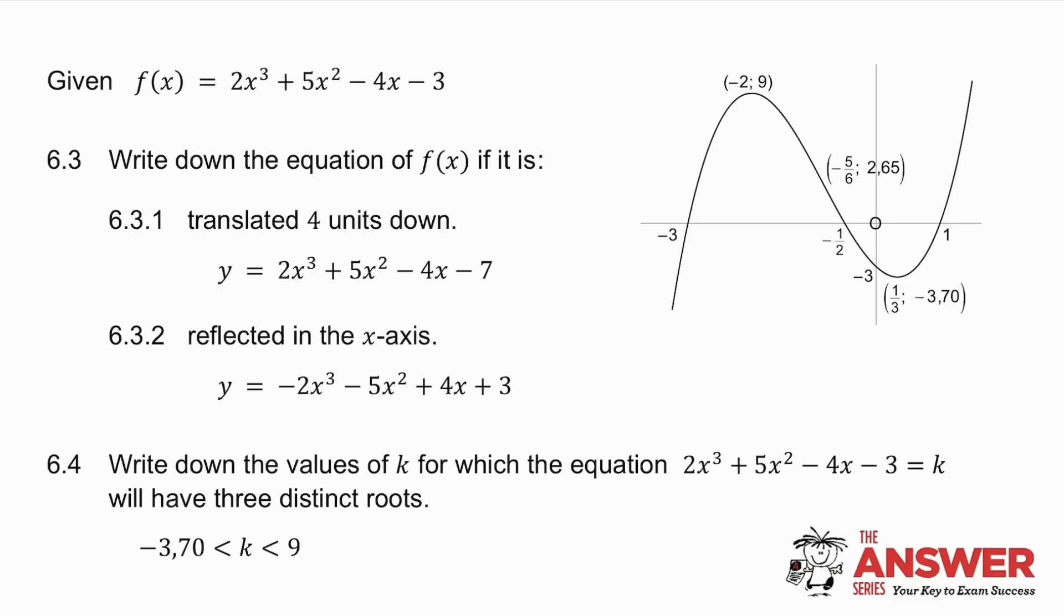6.4, the last question. Write down the values of k for which the equation f(x) is equal to k will have three distinct roots. Now, this is f(x), and this is the graph of y equals k. Y equals k is a horizontal line. So what I'm asking you is, where does f(x) and a horizontal line cut in three different places?